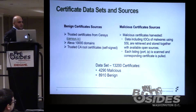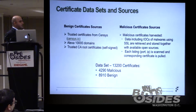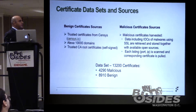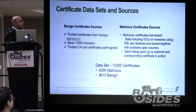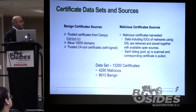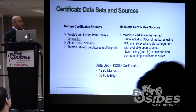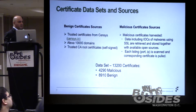Collecting benign certificates is not a big problem; there are many available. We use the source census — plenty of millions of certificates there. We collect the trusted certificates there and sample from them. We also use Alexa 10,000 domains and trusted certificate authority root certificates, which are self-signed — a few hundred of them.